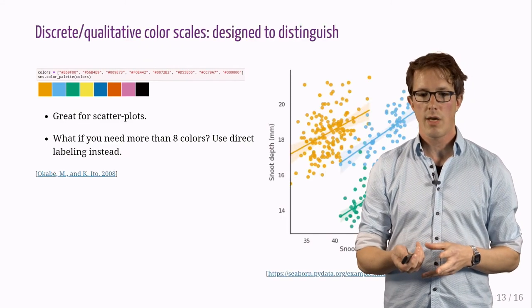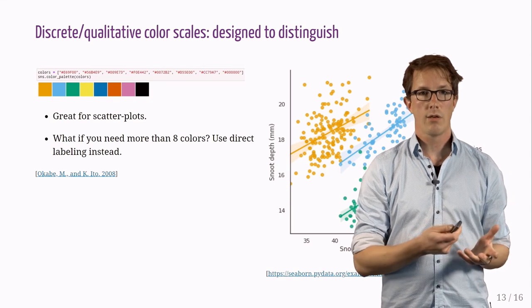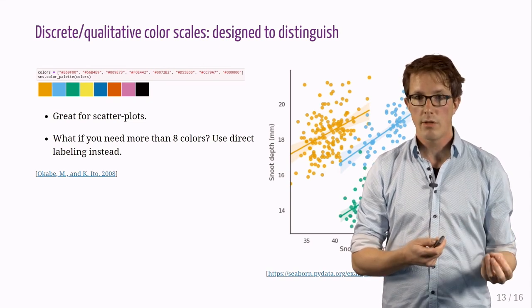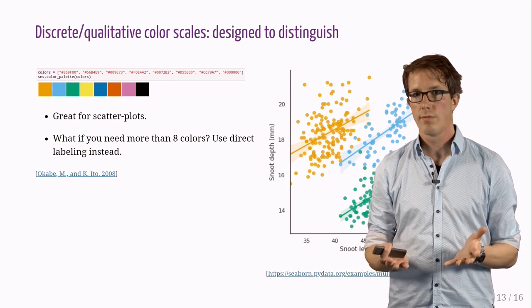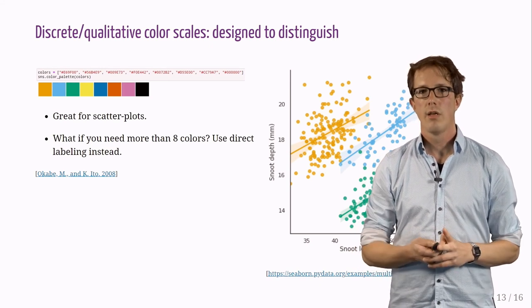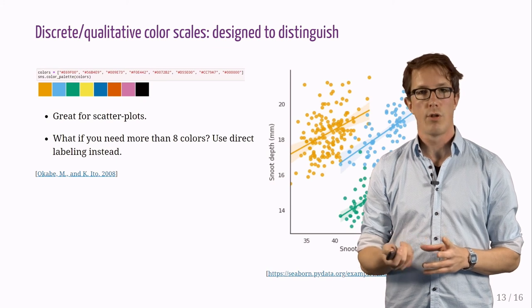Discrete color scales are great for scatter plots. This is a scale by Okabe and Ito designed particularly for color vision deficiencies and contains eight colors. What if you need more than eight? In this case, we should probably use direct labeling or use another plot type.